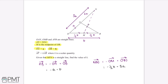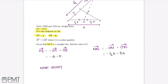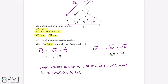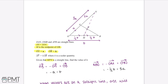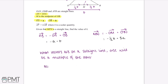We've been told that line MPN is a straight line. One thing we need to know is that if two vectors are on the same line, one will be a multiple of the other. So we're going to add in another variable X. Because MN and MP are both on the same line, MP will be equal to X multiplied by MN. We worked out that MN was equal to negative half B plus 3A.